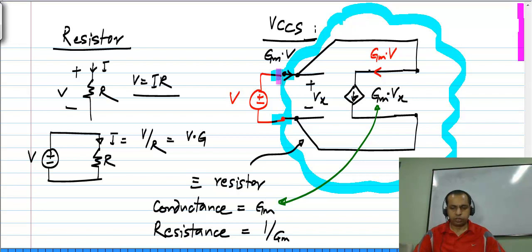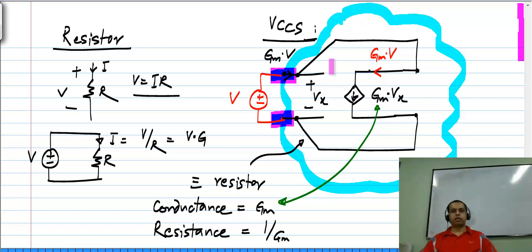We end up with a two-terminal element. There are only these two terminals, and between these terminals there is a linear relationship between current and voltage, because of the linearity of the control source. So this entire arrangement just looks like a resistor — you can take a control source and synthesize a resistor from it.